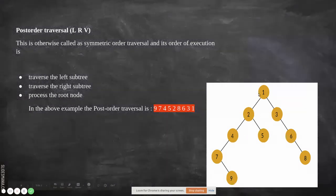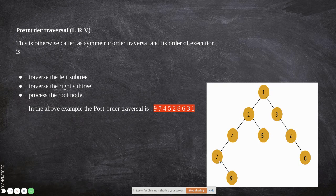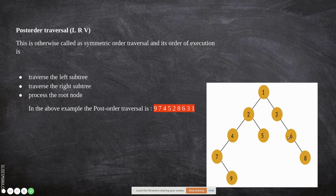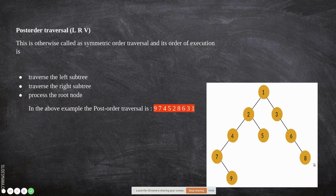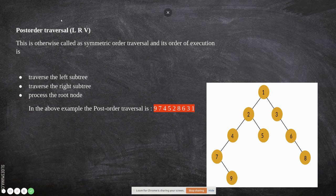Moving to the right subtree of the root, we again go left and right before printing the parent. The right child's subtree is processed: the leaf is printed, then 8, then 6, then 3 is printed. Finally, the root node 1 is printed last. This is how in-order, pre-order, and post-order traversals are performed.